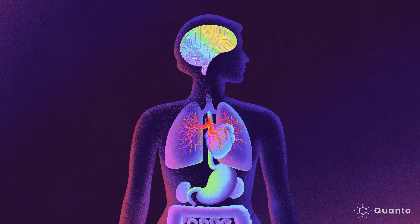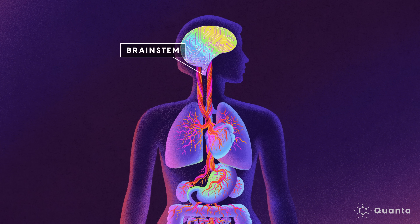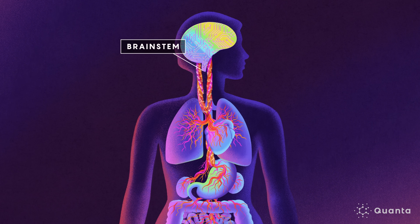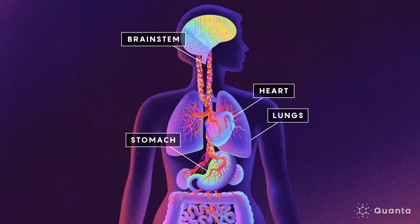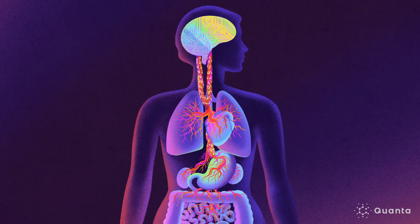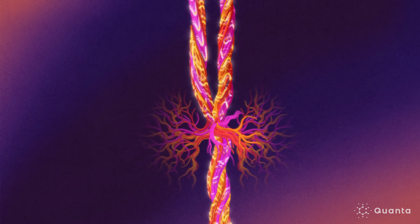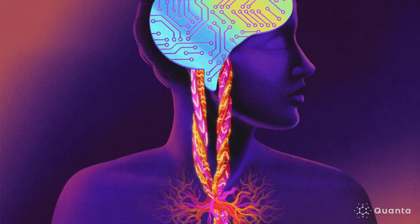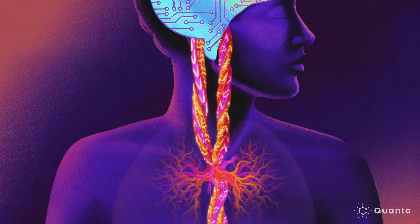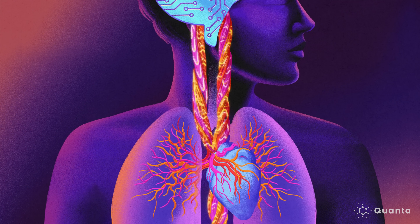The vagus nerve contains some of the longest neurons in the body and connects the brain stem to vital organs including the stomach, lungs, and heart. There are both sensory neurons that take information from the body up to the brain, as well as motor neurons that go in the opposite direction. Through the vagus nerve, the brain stem regulates basic survival systems such as breathing, heartbeats, and hunger.